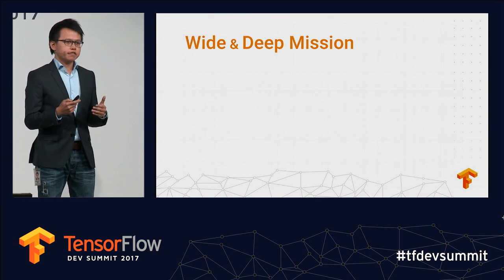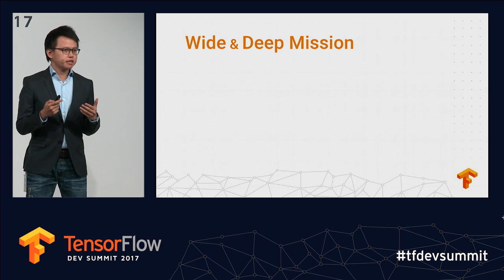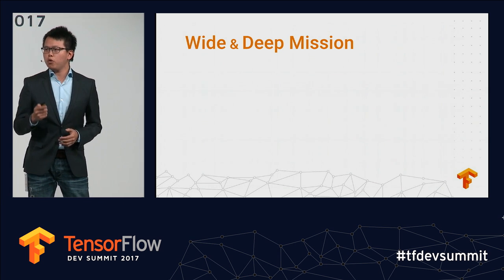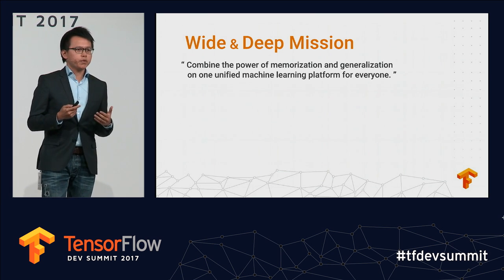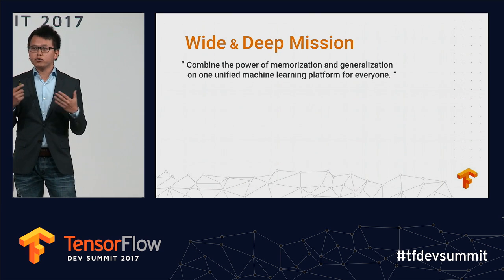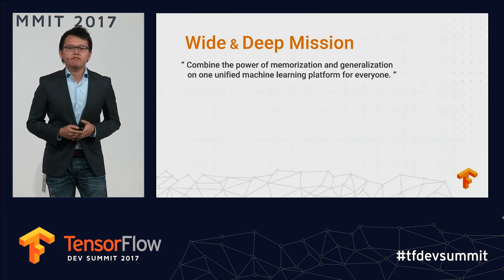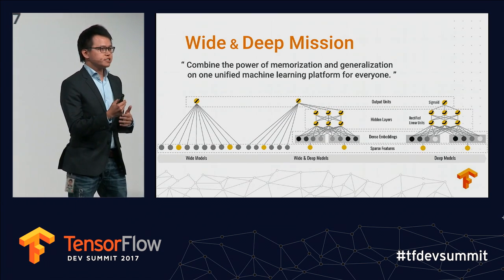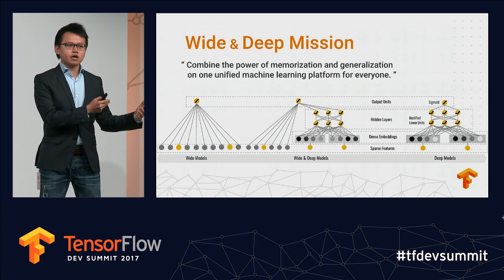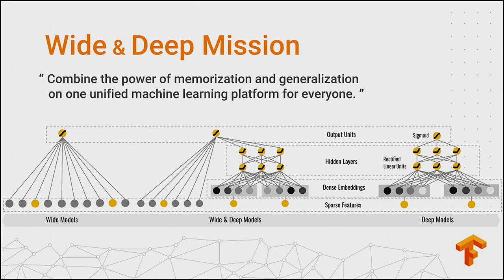At Google, we started the Wide and Deep project with a mission to combine the power of memorization and generalization on one unified machine learning platform for everyone — not just every product team at Google, but also everyone in the open source community, academia, and industry. We worked towards this by jointly training wide linear models and deep neural networks, creating an easy-to-use high-level API in TensorFlow so users can start with simple linear models and gradually add complexity without ever having to leave the platform.